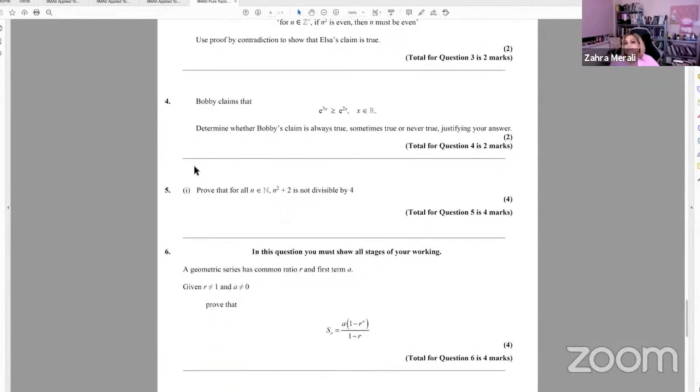Bobby claims that e to the three x is greater than or equal to e to two x. Okay. Nearly, so my other hint is, nearly always, when they say always, sometimes or never, nearly always it's sometimes. So you're looking for some examples that work and some that don't. And the way I think about it is, in some cases, even and odd would make sense, but sometimes positive and negative. So let's think about it. Let's take, you know, when x equals, just take any number to start with. So say when x equals one, e to the three is greater than e to the two. Okay.